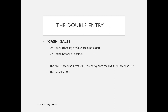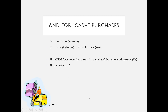For cash sales, the double entry is to debit the bank if we receive a cheque or bank transfer, or debit cash if we receive cash, and to credit the sales revenue account — that's the income. The asset increases, either the bank or the cash, and so does the income account recorded on the credit side. The net effect, as always with double entry, is zero.